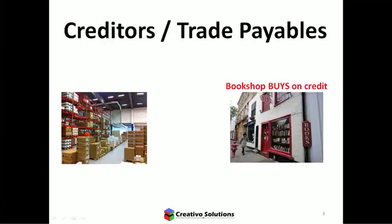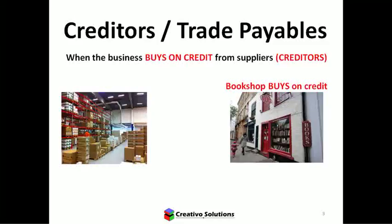Please revise those six most important accounting rules, which you can find in one of the previous videos. In this video, we're focusing specifically on creditors. What is a creditor? We need to identify what's actually happening in the transaction. The focus is always on our business. The example we've been using is a bookshop. This bookshop is going to be buying on credit from their suppliers.